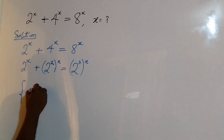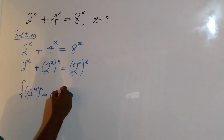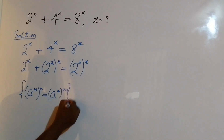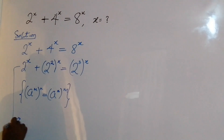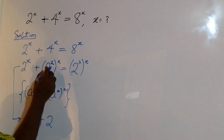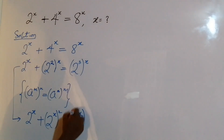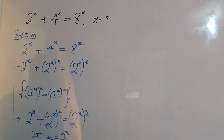Now I'm going to apply this rule: if we have a to the power of m, all raised to the power of n, this can also be written as a to the power of n raised to the power of m — we switch places for m and n. Applying this rule to the equation, it reduces to 2 to the power of x plus 2 to the power of 2x equal to 2 to the power of 3x. Now I'll use substitution — let m equal 2 to the power of x.